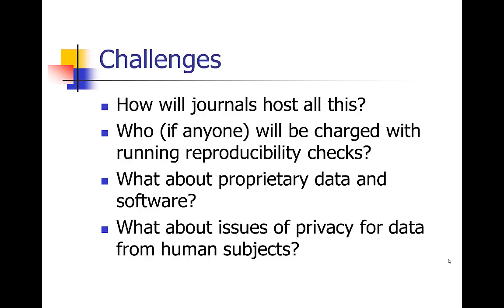It's unclear how journals can host all of the code and different software for all these analyses, or host all of the data in these major data sets. Who will be in charge of running these reproducibility checks? They can take a really long time even if you have the code and the data. What if you've got proprietary data and software you don't want to share? And if you've got human subjects data, are there issues of privacy? But people are really working on this and trying to come up with ways to do reproducible research.